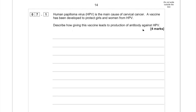With these questions to do with vaccines, you need to be really careful because you can't jump straight in and talk about memory cells in immunity. You have to really analyse the question. In this one, they've asked you how it leads to the production of antibody, so you're really going to be talking about the primary immune response.